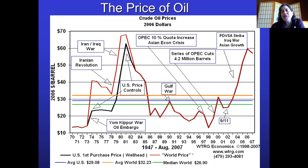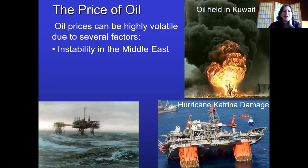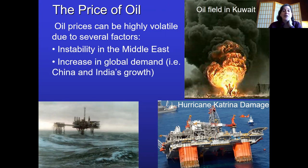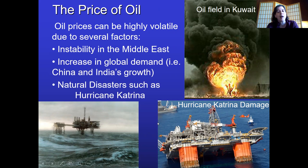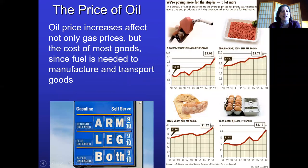Over time the price of oil goes up and down with various factors: OPEC actions, global recessions, and wars can all affect oil supply. Oil is controversial because so many different things can make the price go up and down — including instability in the Middle East, increasing global demand from growing economies like China and India, natural disasters like Hurricane Katrina that damaged offshore oil platforms, and accidents like the BP oil spill.